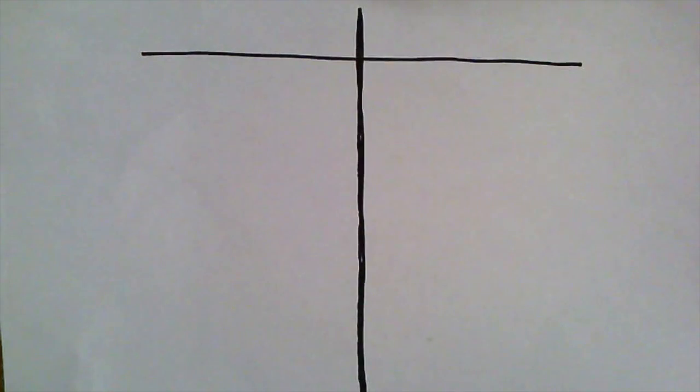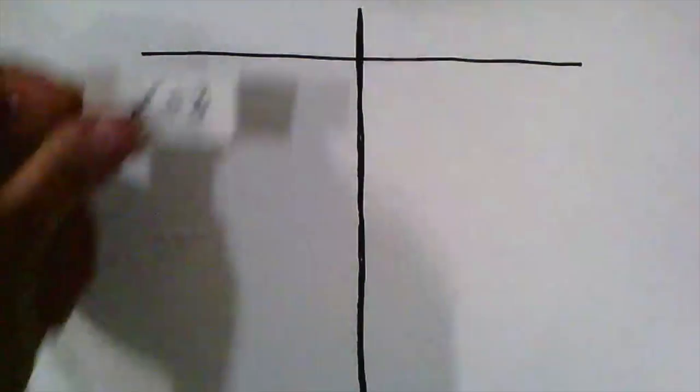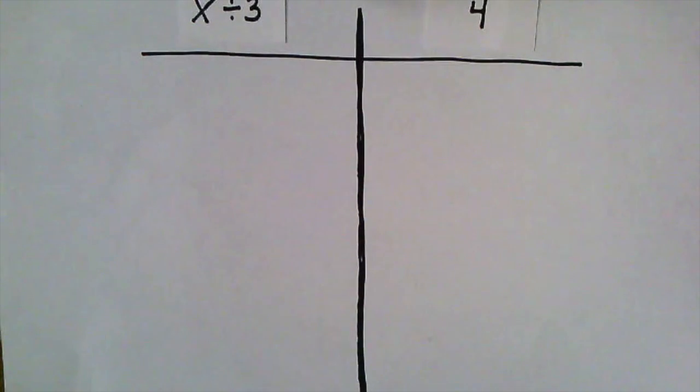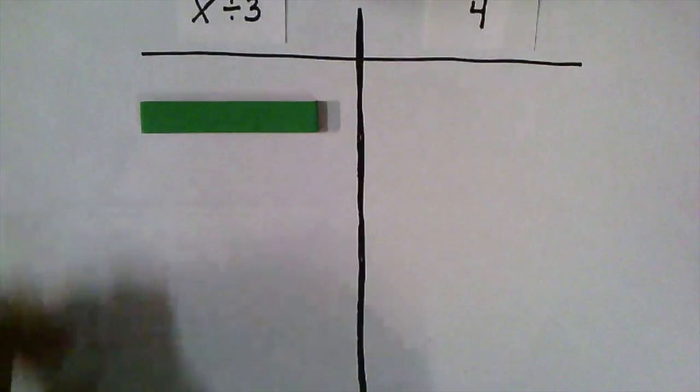For our final example with the algebra tiles, we're going to look at a division problem. On one side, we have x divided by 3. And on the other side of our equation, it says that it's equal to 4. So division requires a little bit of imagination because we've been using this tile to represent an x. But now when we have x divided by 3, we're thinking about splitting this tile into three different parts.